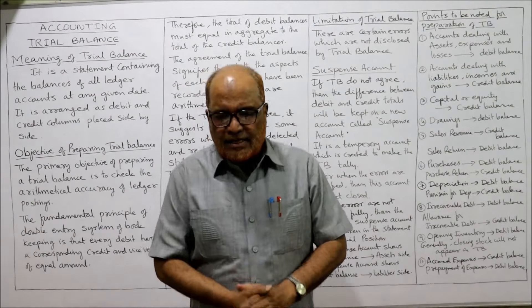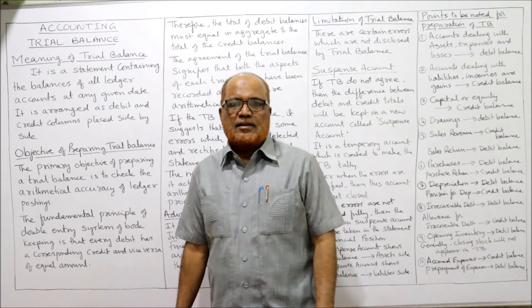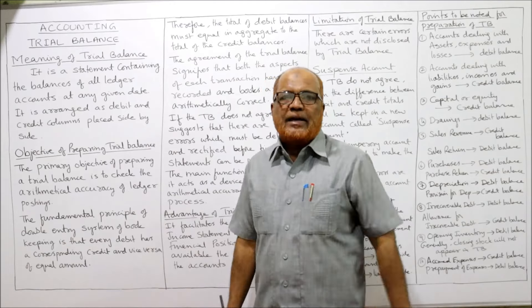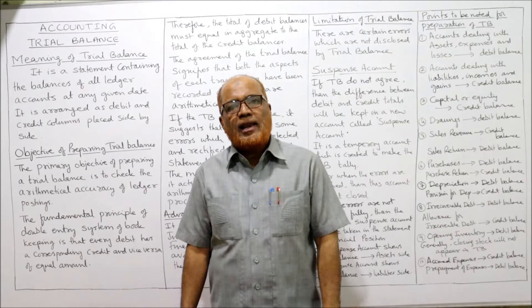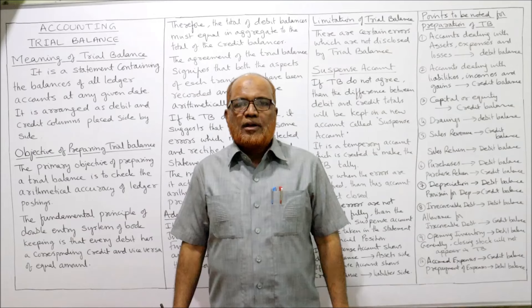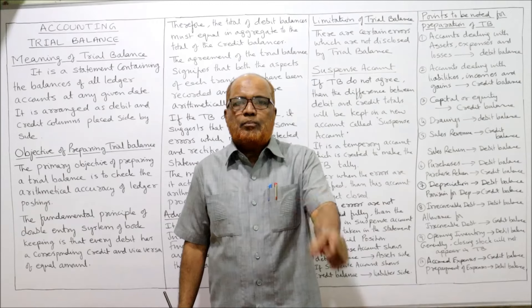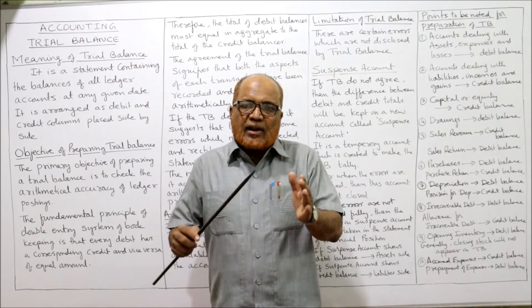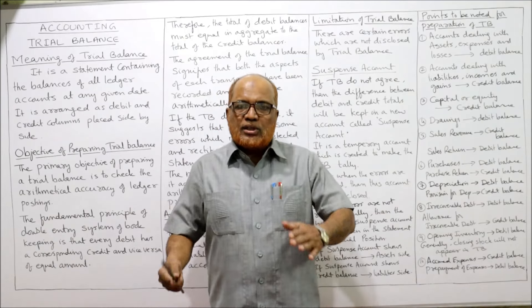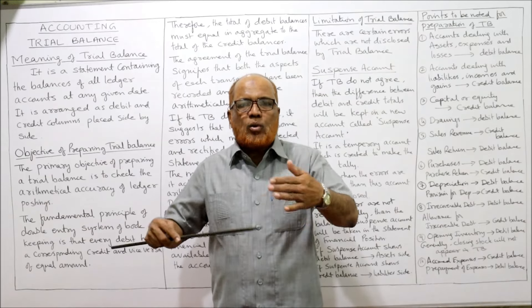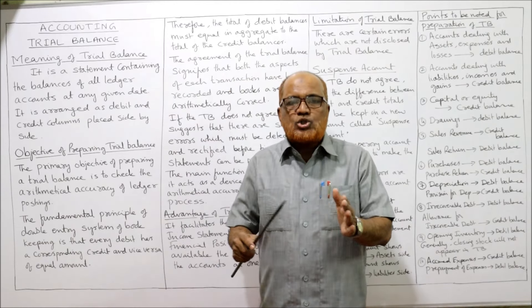A trial balance is a statement which shows all the ledger account balances. The accounting process begins with recording entries in the books of original entry through business documents. Using these business documents, entries are first recorded in books of original entry, and then periodically posted to ledger accounts. This recording and posting process continues throughout the year.